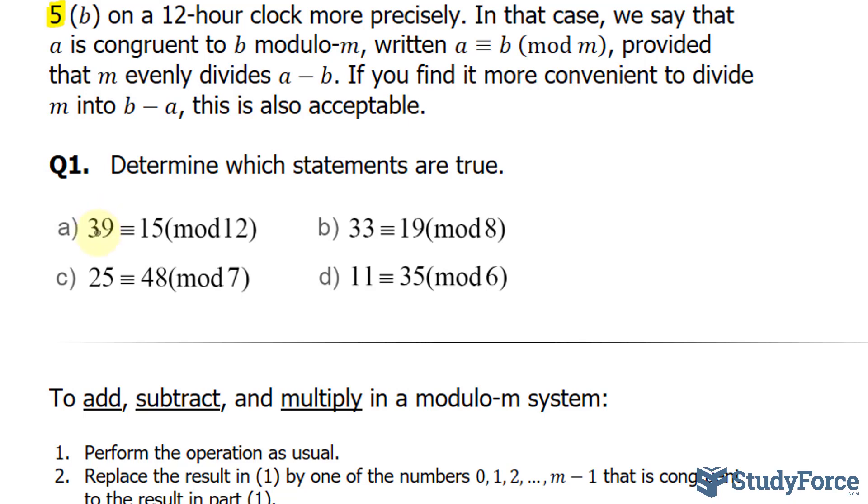In this question, we're being asked, determine which statements are true. For question A, we have to determine whether 39 is congruent with 15, using an M value of 12. So what I will do is subtract 39 and 15. The difference of 39 minus 15 is 24. 24 divides into 12 twice. Now because it's divisible by 12, this statement is true.